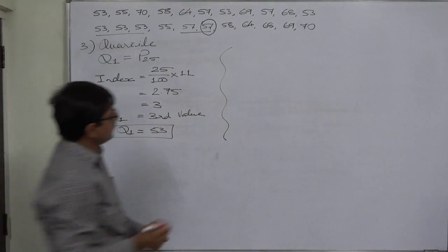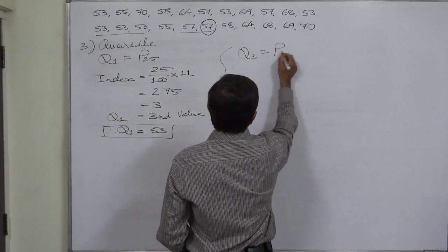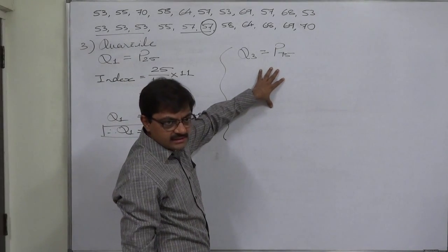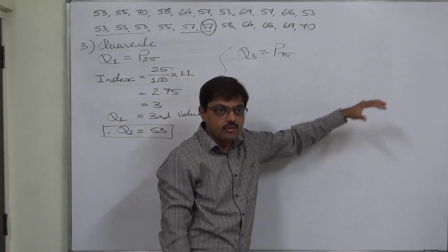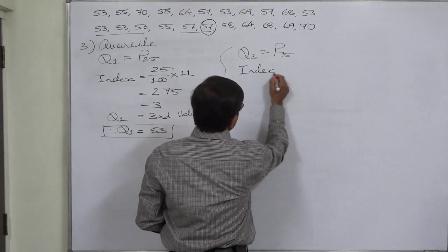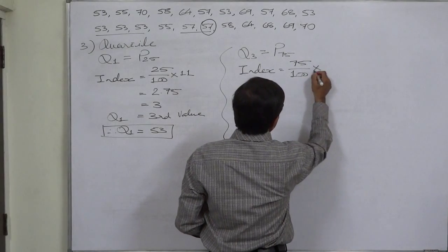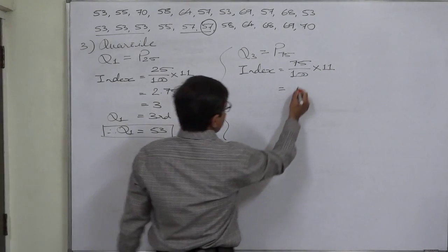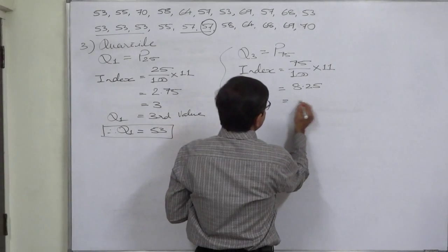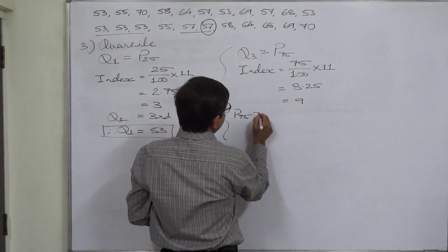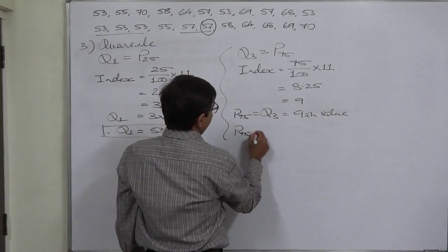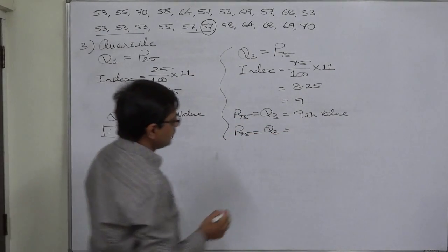Similarly, let us find the third quartile Q3, which is P75 or the 75th percentile — 75% of data values are less than this and the top 25% are greater than this. The index is 75 divided by 100 times 11, which equals 8.25. Since the index is not an integer, we go to the next integer value, 9. So P75 or Q3 is the ninth value, which is 68.